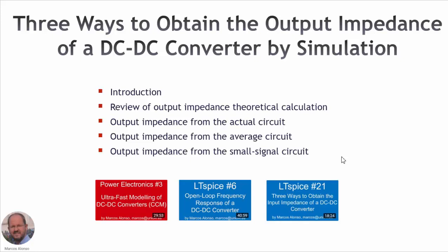In this presentation we will see first an introduction, then we will review the theoretical calculation of the output impedance of a DC-DC converter, and then we will present the three methodologies to obtain by simulation the output impedance. The first one is by using the actual circuit, the second one is by using the average circuit, and finally by using the small signal circuit.